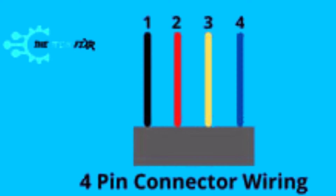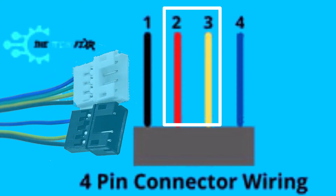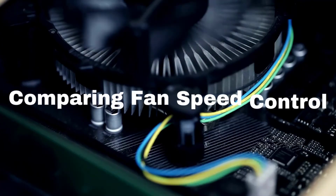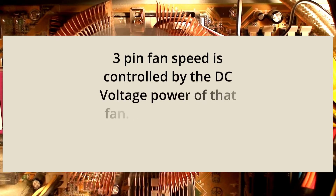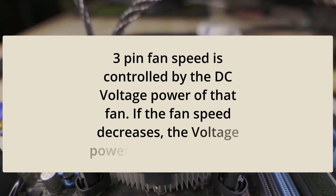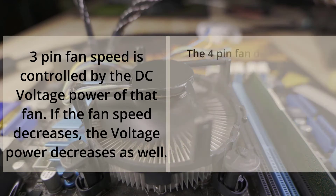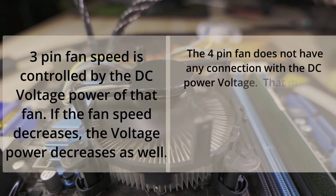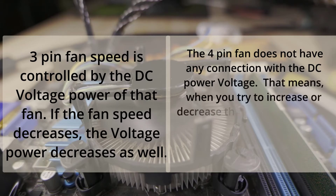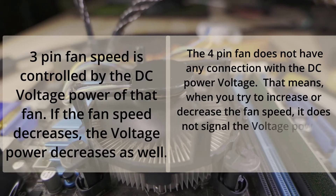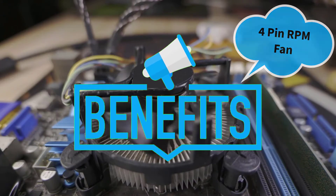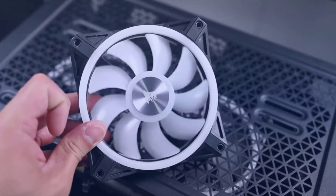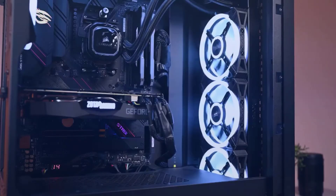In 4-pin fan connectors, the 2nd and 3rd wire can come in red, yellow, or green color. A 3-pin fan speed is controlled by the DC voltage power of that fan — if the fan speed decreases, the voltage power decreases as well. On the other hand, the RPM speed of a 4-pin fan does not have any connection with the DC power voltage. That means when you try to increase or decrease the fan speed, it does not affect the voltage power, and your fan does not lack in power voltage. That is the bigger benefit with a 4-pin fan — the fan speed is not dependent on the voltage power, rather it is controlled by another option known as PWM mode.